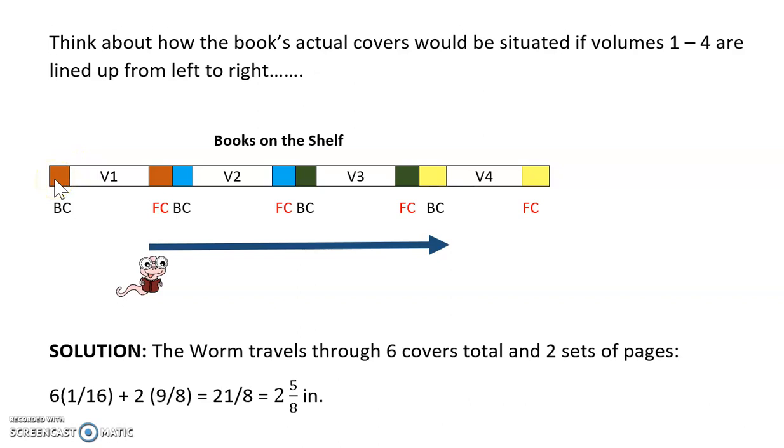So this little worm is not tunneling from the very first cover, which is the back cover of volume one, to the front cover of volume four, which is at this end. It's traveling from the front cover of volume one here to the back cover of volume four.